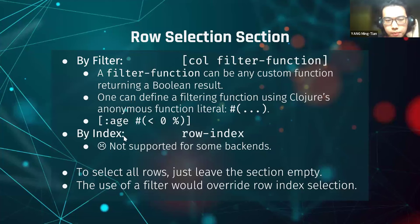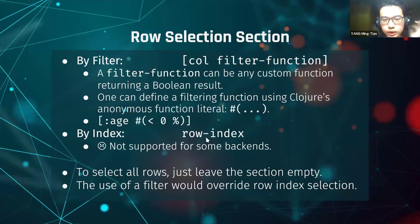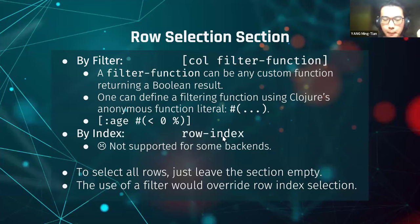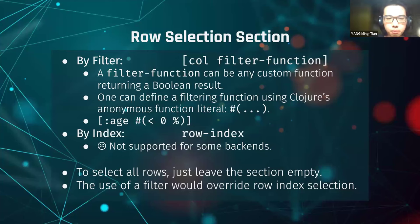We also have by-index row selection, supported by Tablecloth but not by Clojask or Geni. You just provide the row indexes to the query operation. To select all rows, you can leave the section empty. Note that you cannot perform both by-filter and by-index selection simultaneously — if both are provided, the filter takes precedence.